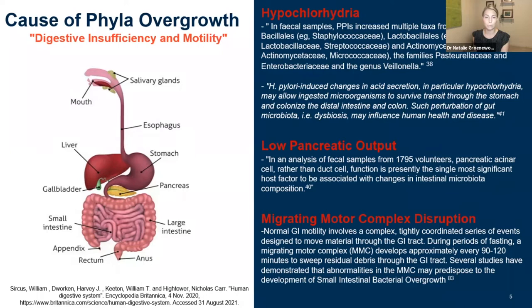So when there's any overgrowth at the phyla level, we're generally thinking that there is some sort of digestive insufficiency or a motility issue that's playing a large role in causing this overgrowth. I'm going to highlight the three major factors at play here that predispose our patients to this overgrowth pattern. The first one is hypochlorhydria or low stomach acid, the second being low pancreatic output, and the third being a motility issue. All three of these can lead to an overgrowth of these normal bacteria flora.